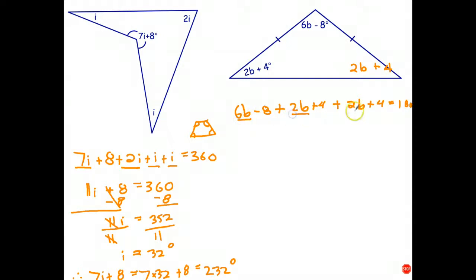So 6b plus 2b plus 2b plus 2b. 6 plus 2 is 8 plus 2 is 10. So 10b. Now, minus 8 plus 4 plus 4. Well, that's 8 minus 8. That just goes to 0. And we get the equation 10b equals 180. Divide both sides by 10. And b equals 18 degrees. So we've solved the equation.